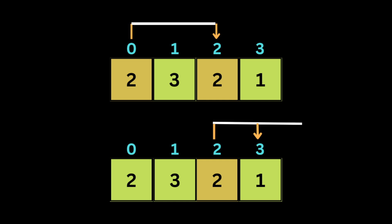Starting from index 0, we can jump from index 0 to index 2 with a jump of size 2. Then we can jump from index 2 to index 4 with a jump of size 1, which means we reach the last index of the array.